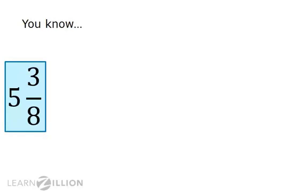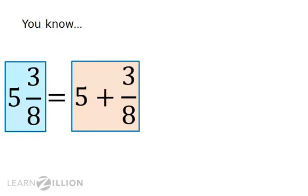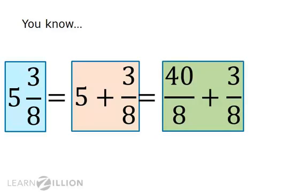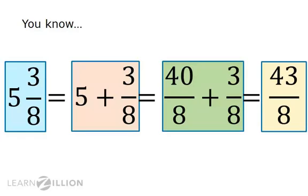You know that a whole number and the fractional part of a mixed number can be regrouped to create an improper fraction. For example, 5 and 3 eighths — the 5 can be regrouped. We'll take the 5 and create 40 eighths along with the 3 eighths that were already there. All together, the 40 eighths plus the 3 eighths create 43 eighths.